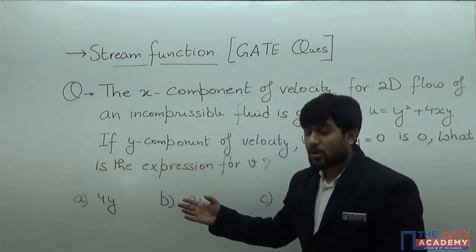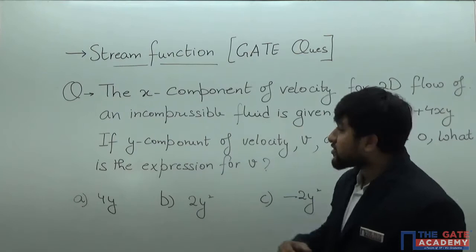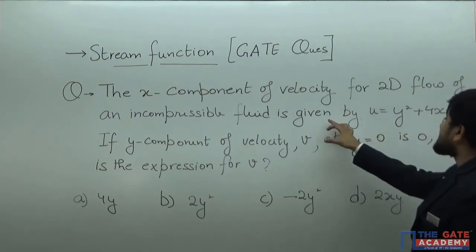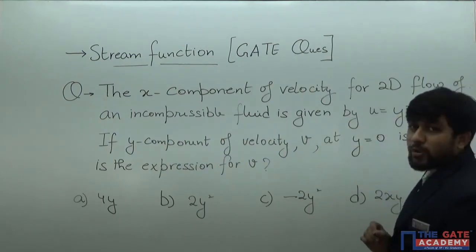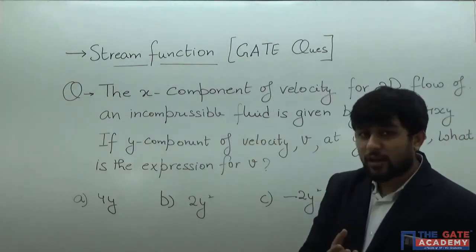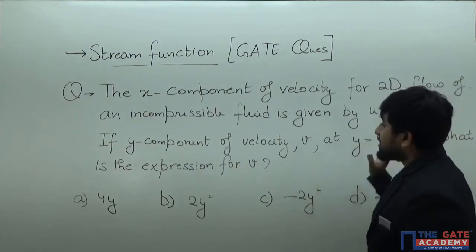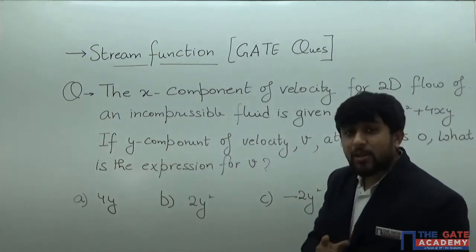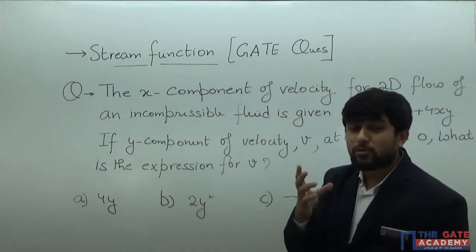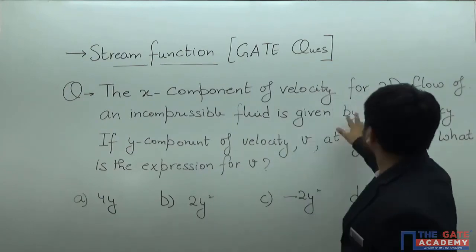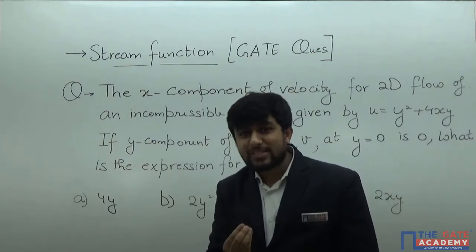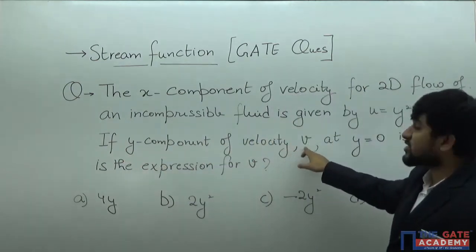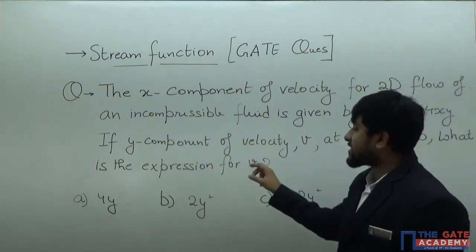Here is another question from GATE examination for mechanical engineering. The x-component of velocity for two-dimensional flow of an incompressible fluid is given by u equal to y² plus 4xy. They are saying that the fluid is incompressible. Remember, whenever the fluid is incompressible we can define stream functions. If the y-component of velocity v at y equal to 0 is 0, then what is the expression for v?